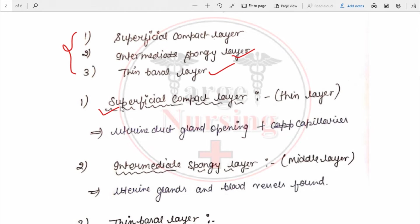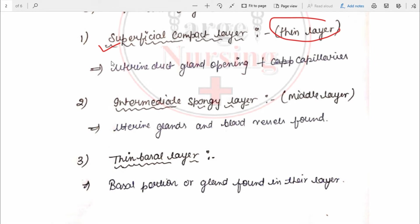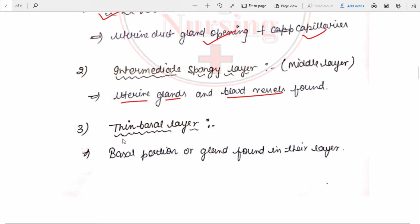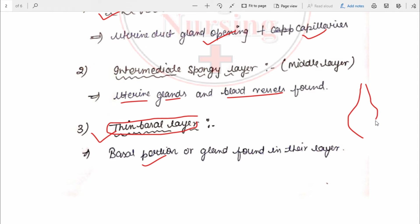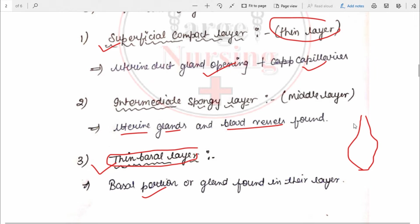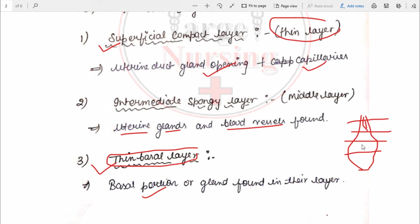The first layer is the superficial compact layer, which is the uppermost layer. Uterine duct glands and capillaries are present in this layer. The intermediate layer is the middle layer, where uterine glands and blood vessels are present. The thin basal layer is the third and deepest layer, where the basal portion of the glands is found. Uterine gland openings and capillaries are present in the compact layer, the entire glands and blood vessels in the intermediate layer, and the basal portions in the basal layer.